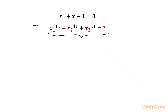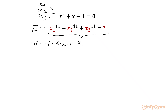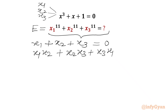Let's get started by considering this as our required expression E, with roots x1, x2, and x3. We can use Vieta's formulas: the sum of roots x1 + x2 + x3 = 0, the sum of products taken two at a time x1·x2 + x2·x3 + x3·x1 = 1, and the product of roots x1·x2·x3 = -1.